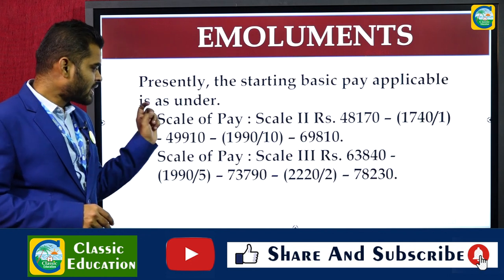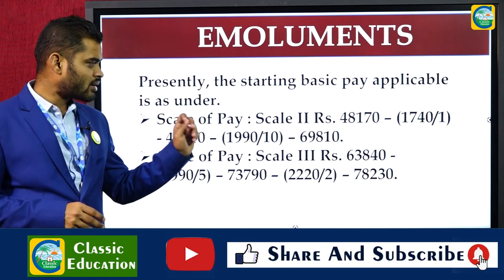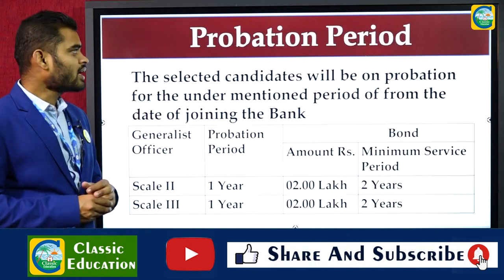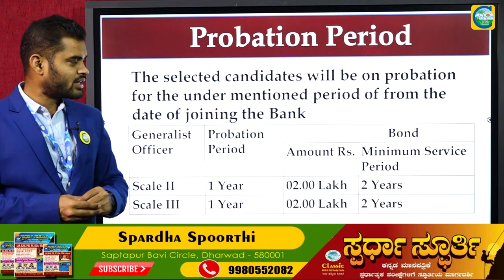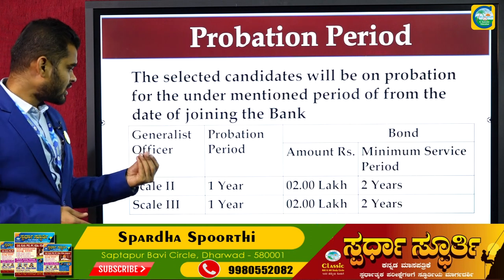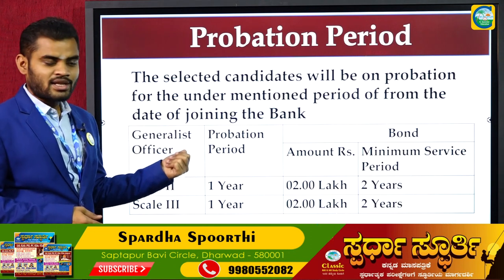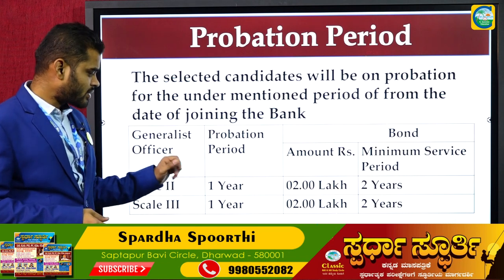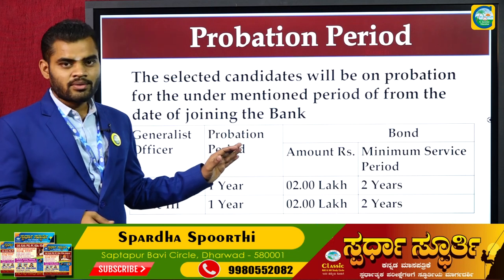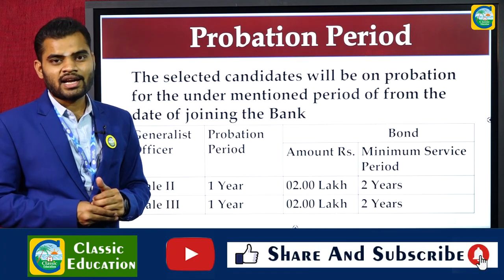For Scale-3, you can select based on the previous number of years of experience. The professional period for Scale-2 is 17 years, and you can balance it out within the year.